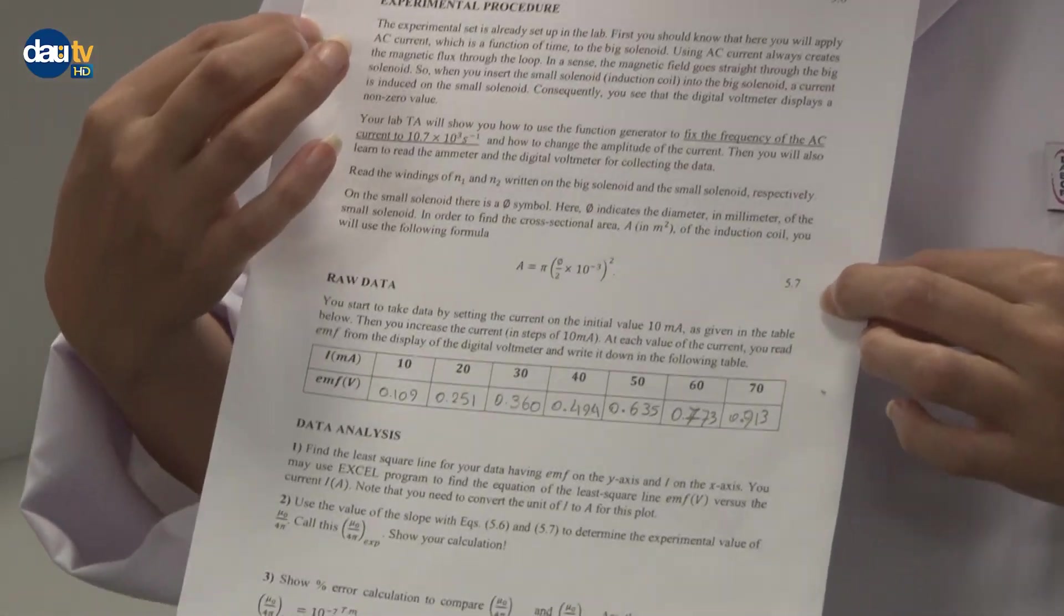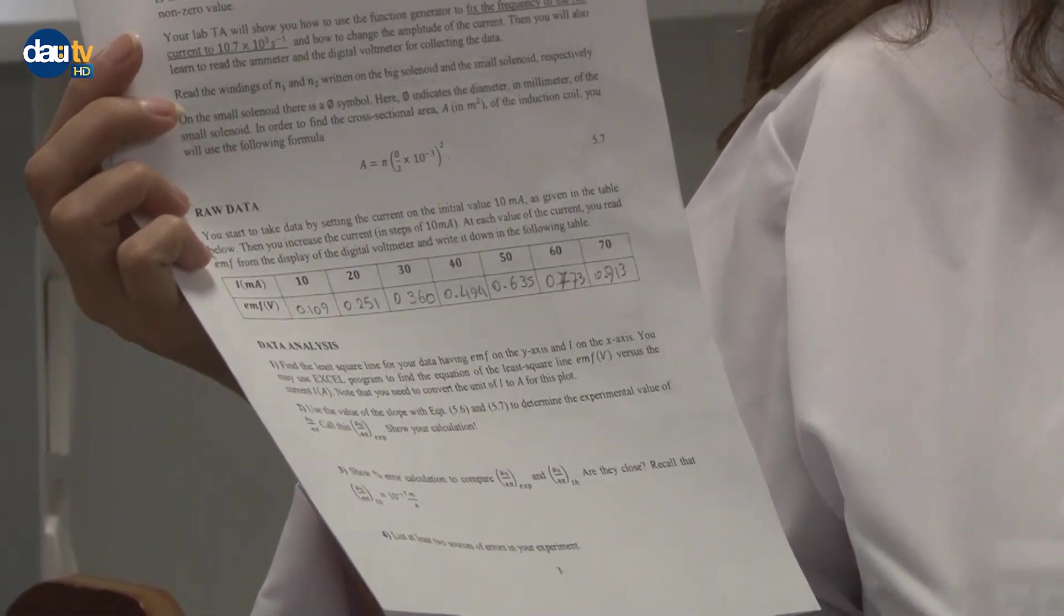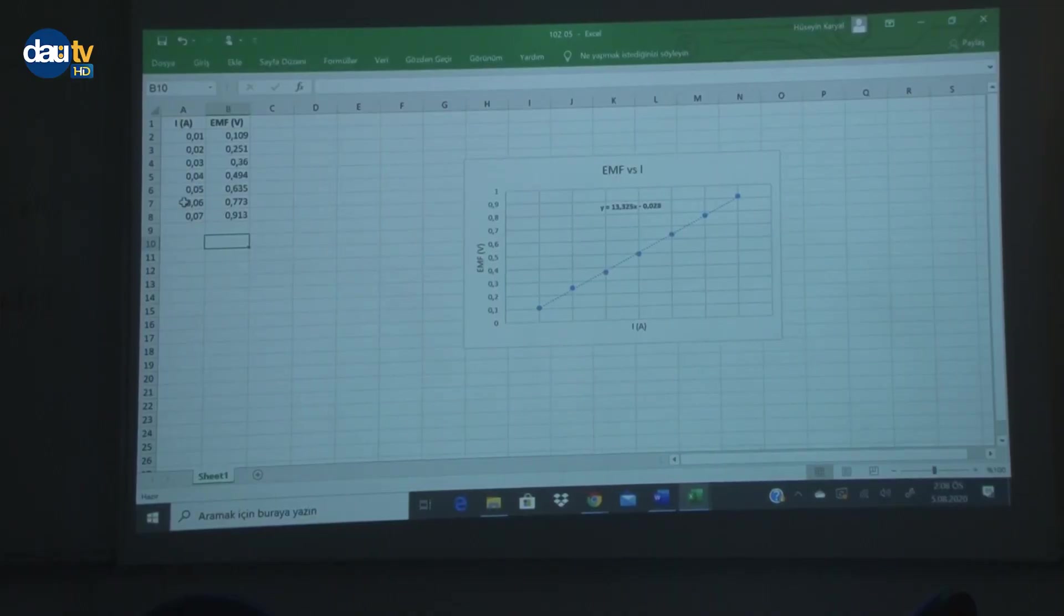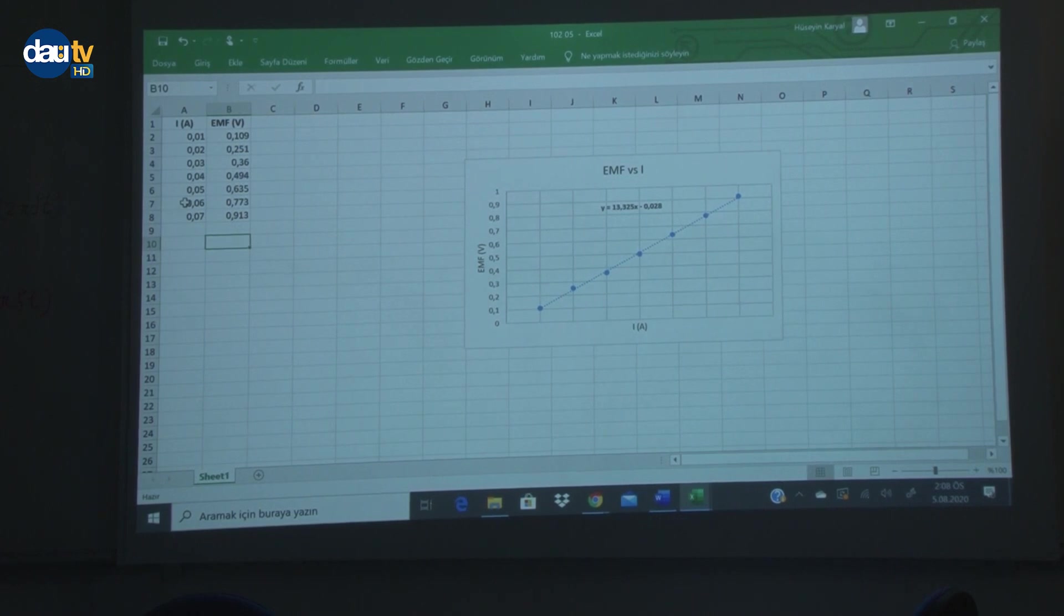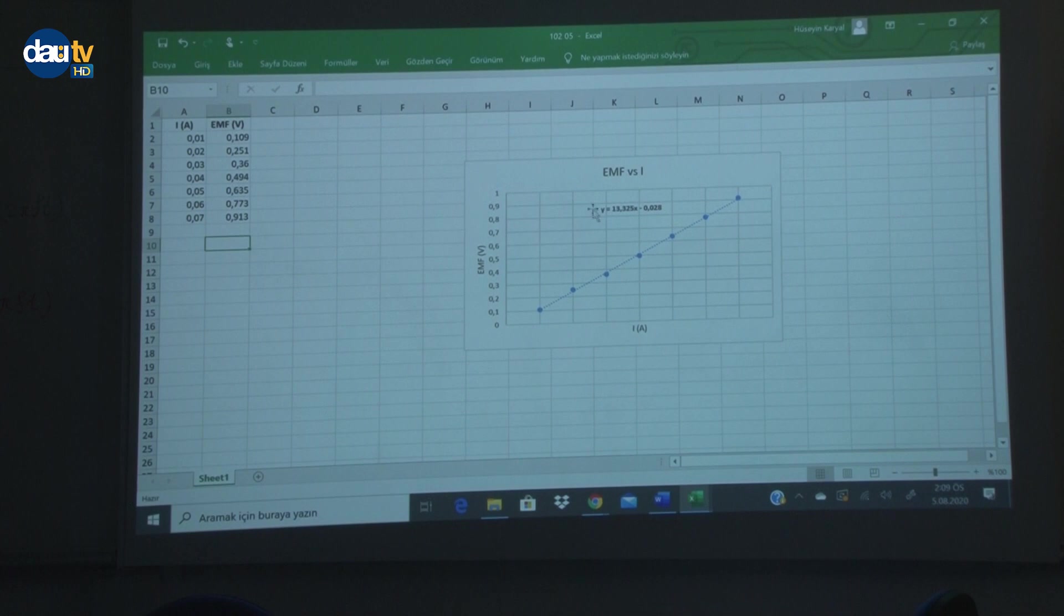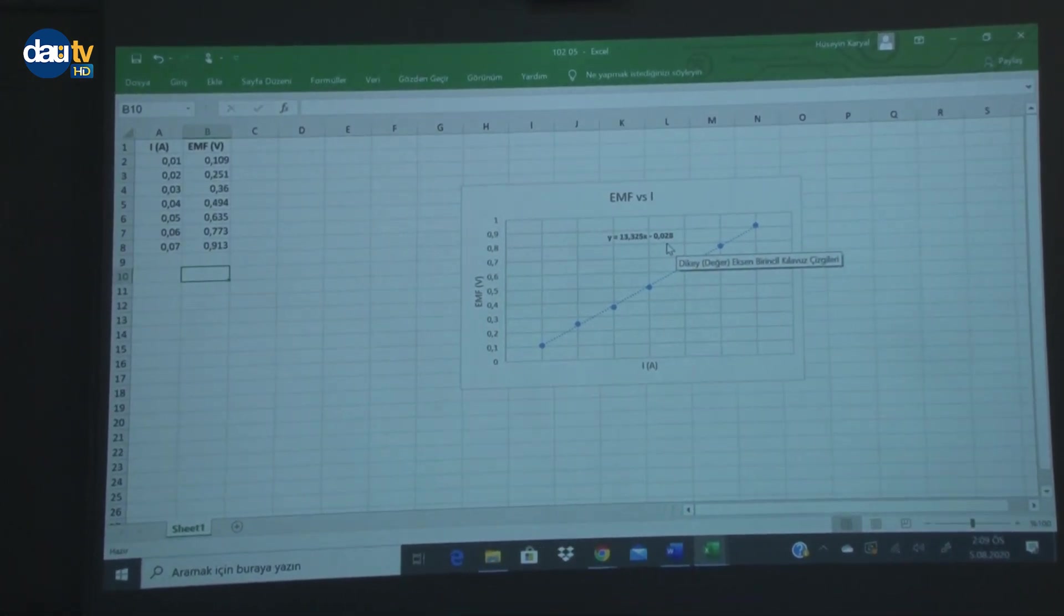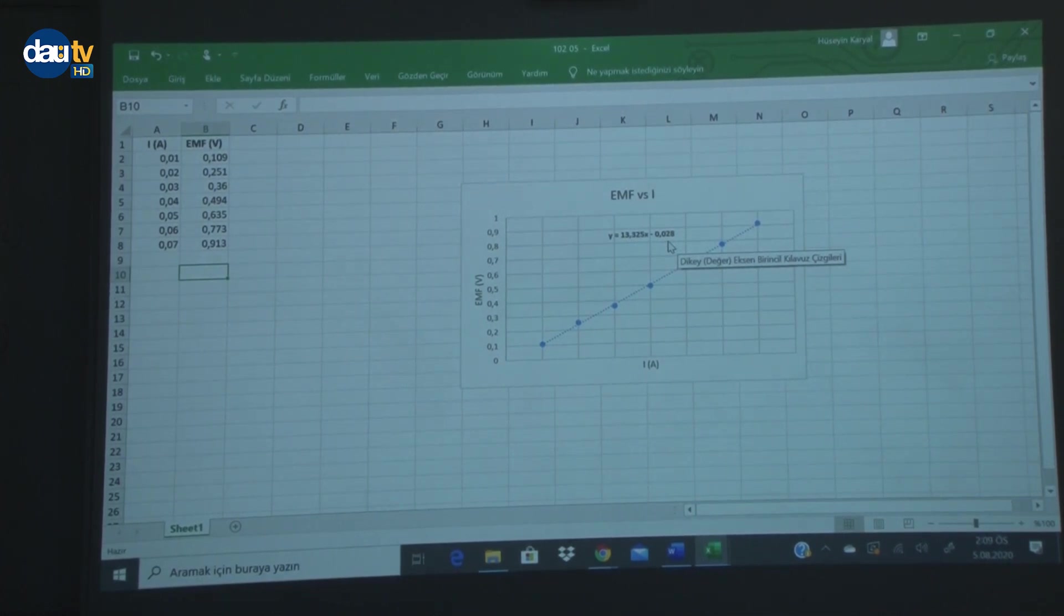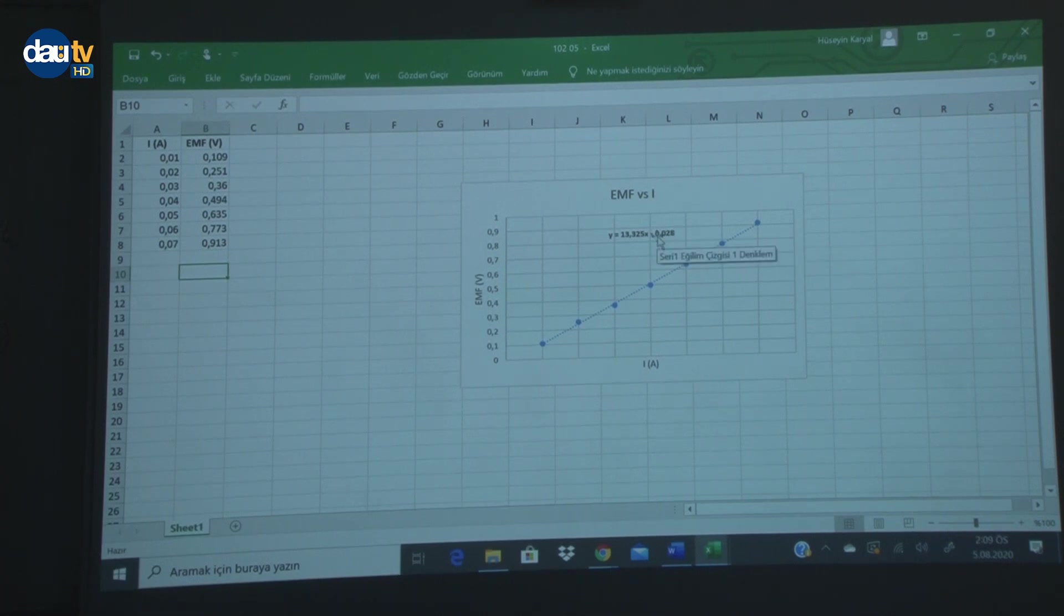For defining the slope we have to enter our data in Excel and draw our graph to find equation and define the slope to substitute in our equation to define mu zero over 4 pi. I entered all data in the Excel file. We have two columns: I in ampere, I converted all data which were in milliampere to ampere, and the second one shows our value for EMF. When you enter your data the graph will appear. See this equation is the most important part of this experiment. I explained that the y-intercept is almost zero, see this value is too small. So we expect our graph pass from this value when it cuts the y-axis and this is our slope 13.325.